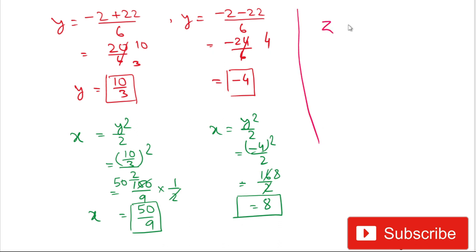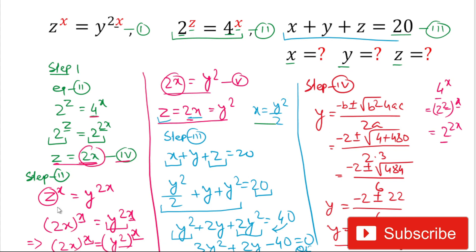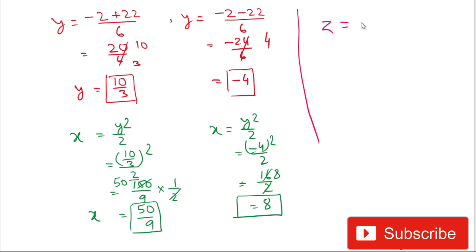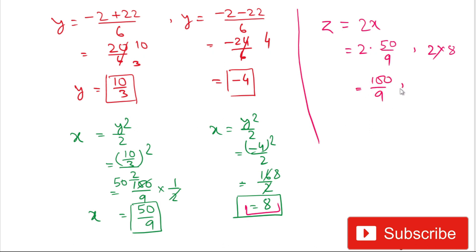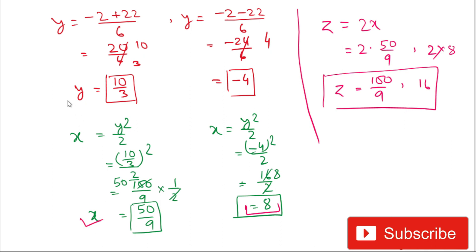Finally we calculate z using equation 4: z equals 2x. For x equals 50/9, z equals 2 multiplied by 50/9 equals 100/9. For x equals 8, z equals 2 multiplied by 8 equals 16. So the complete solutions are: x equals 50/9, y equals 10/3, z equals 100/9 — and x equals 8, y equals minus 4, z equals 16.